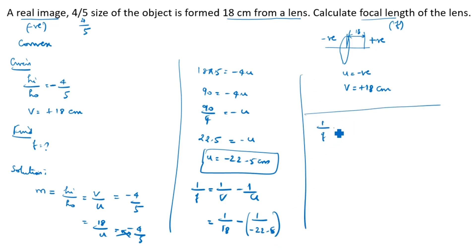1/f is equal to 1/18 plus, minus minus plus, 1 divided by 22.5. After that, we need to multiply by 10 divided by 10. Why? Because 0.5 is there in 22.5, so we remove this decimal point. That's why we have to multiply by 10, divided by 10.